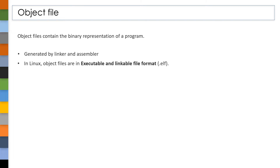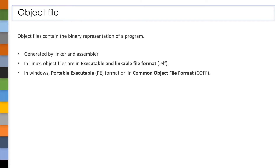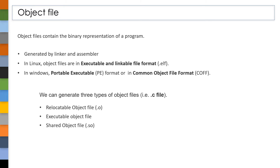Whereas in Windows, these object files are in portable executable format or common object file format. From a C program, i.e., a .c file, we can generate three types of object files: relocatable object file, executable object file, and shared object files. As of now, we are not going to use shared object files, so we will discuss about them in our upcoming videos.